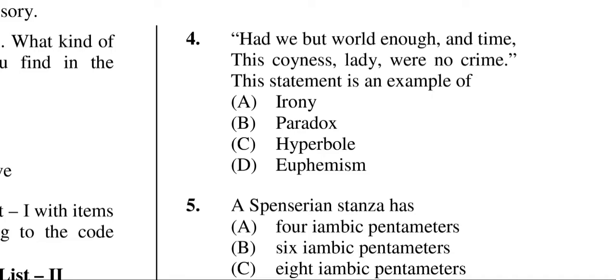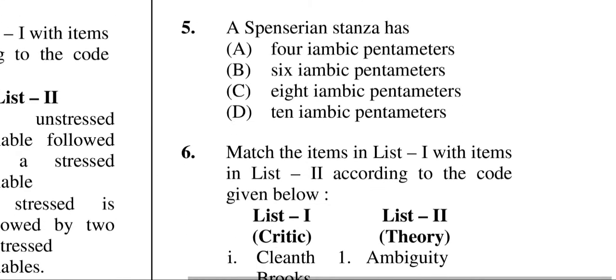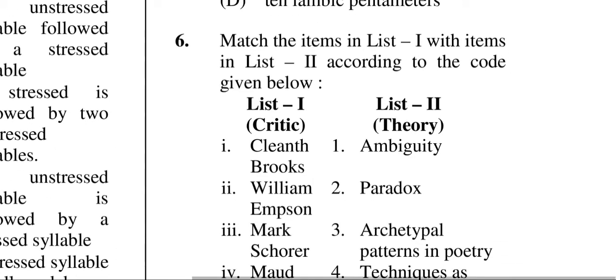Question four: 'Had we but world enough and time, this coyness lady were no crime' — this statement is an example of A, that is ironic. Question five: a Spenserian stanza has how many pentameters? The correct answer is C — eight iambic pentameters.